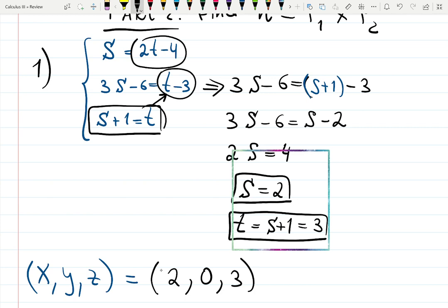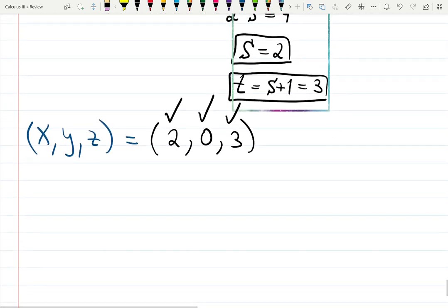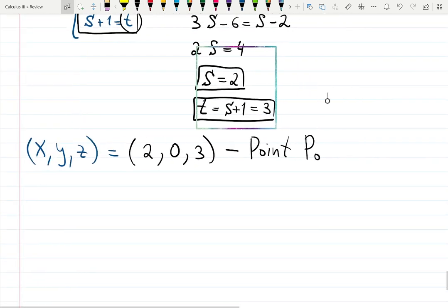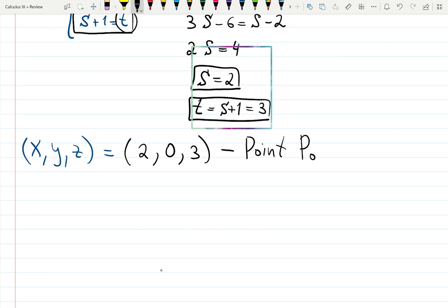Or we could plug it into these and you can check and you should check that the answer should be the same. 2t is going to be 2×3 = 6, 6-4 is 2. T-3 is 3-3 is 0, and t is 3. The same, so the point is correct. That is my point P₀.